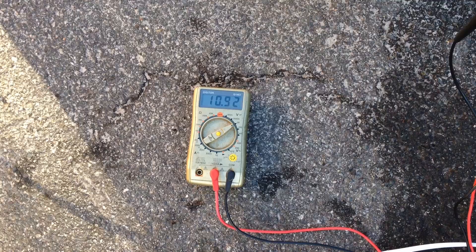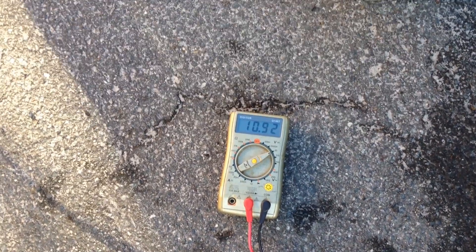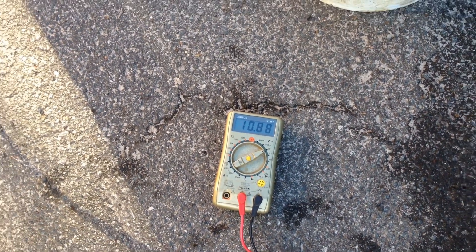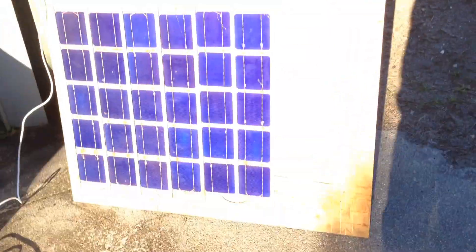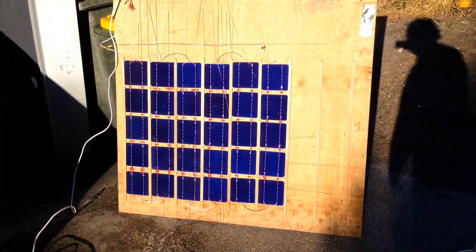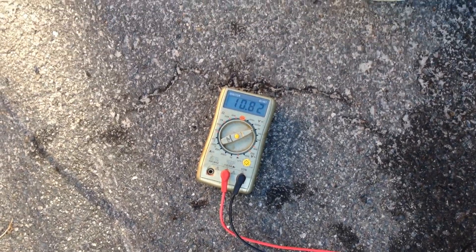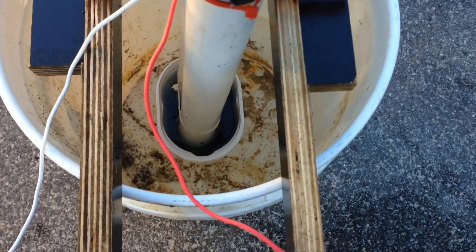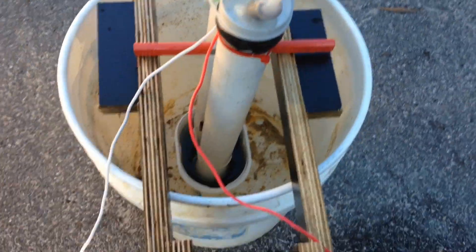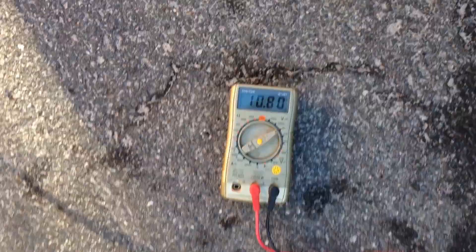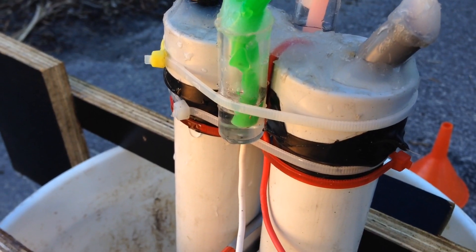I'll measure the voltage and then we can calculate what the wattage is that I'm getting off right now. Got the multimeter measuring voltage now and we're getting around 11 volts at 2 amps, so that's around 22 watts I'm getting off these 30 cells. That's about what I expected. The voltage is steadily lowering due to the resistance of the electrolysis in my hydrogen generator slowly lowering as well. So I'll leave that going for a while and see how much current we can get going, hopefully generating a fair bit of hydrogen gas.